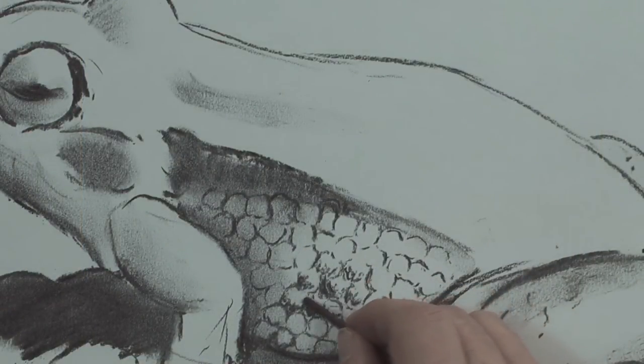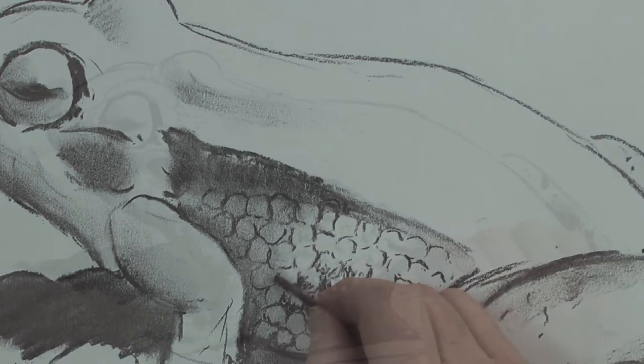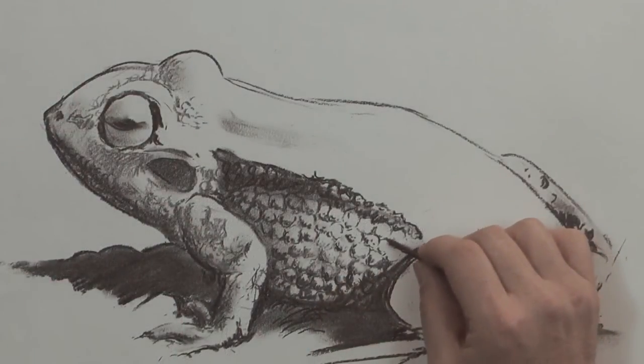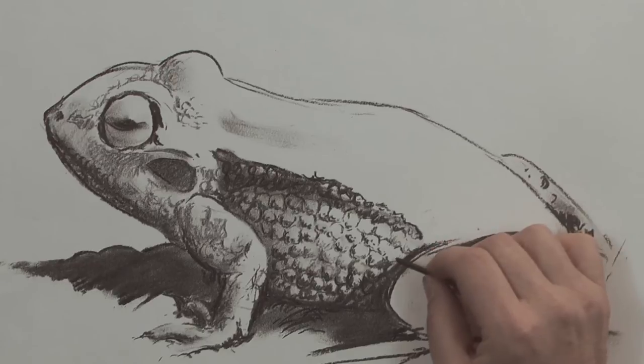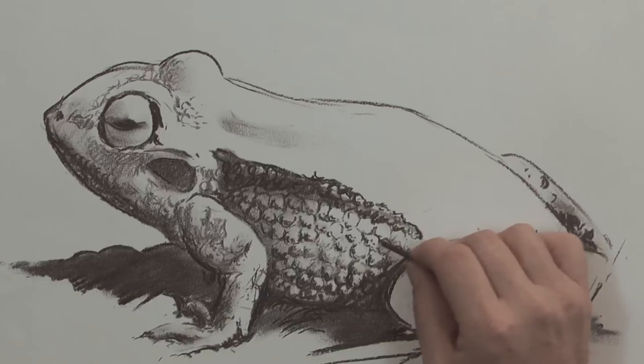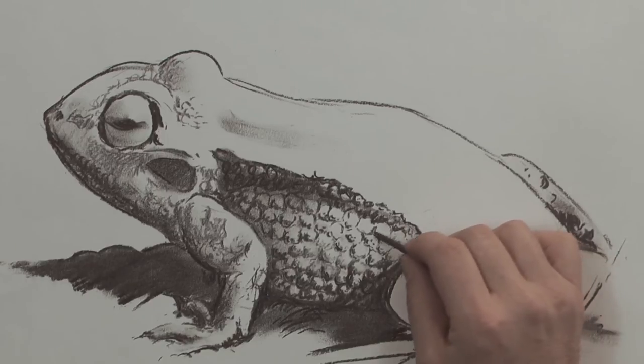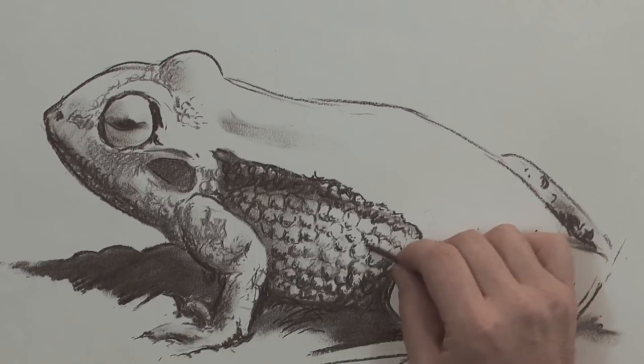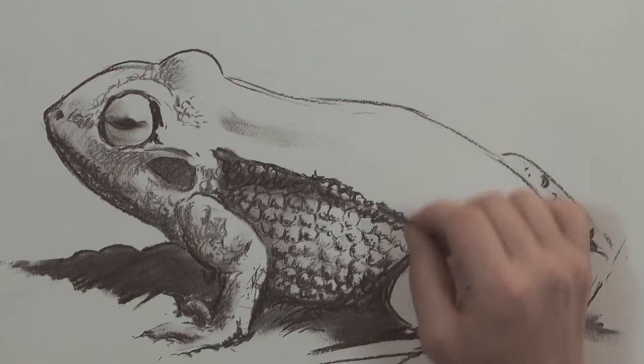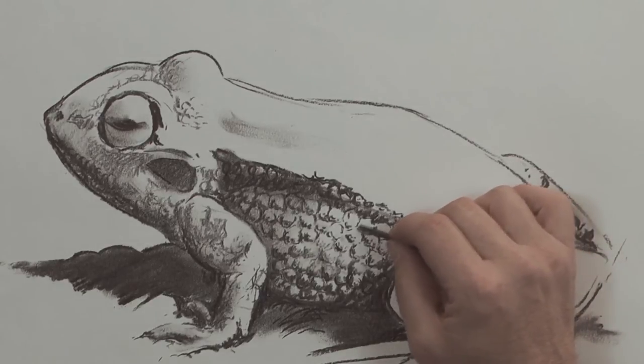Now an alternative to smudging with your finger is if you just use the charcoal very lightly, like I'm only just touching. And that sort of gives it sort of a grey tone as well. Probably a nicer grey tone for the sort of bumpy warty frog thing that I'm drawing here.